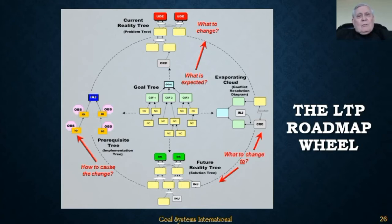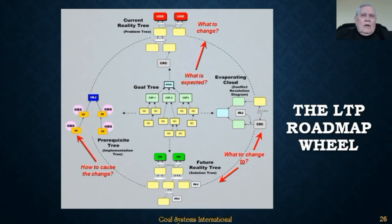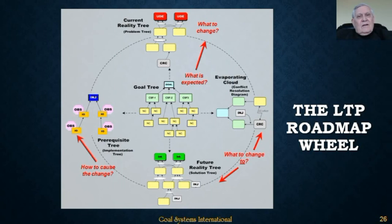Although the picture shows the process ending with the execution of the changes, in reality we'd be remiss if we didn't observe the effects of our changes on the system and adjust to refine them if they didn't fully achieve the system performance we'd hoped for. That implies that after some period of time we start the process all over again — review the required performance with the Goal Tree, remeasure system performance against it, construct a new CRT, and the cycle continues until all divergences between expected and actual system performance are eliminated.